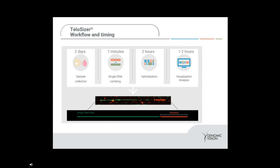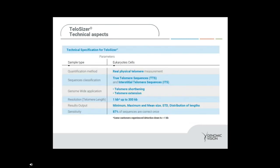The technical specifications of Telosizer — available in our product flyer and application note on our website — include measurement of real physical telomeres, detection of both true telomere sequences and interstitial telomere sequences, and measurement of genome-wide telomere shortening and telomere extension. The actual telomere length range that we can measure is from 1 KB up to 300 KB. We provide as part of our service results the minimum, the maximum, the mean size, the standard deviation, and the distribution of lengths. Our sensitivity is 87% using our Fiber Smart technology inside Fiber Studio.